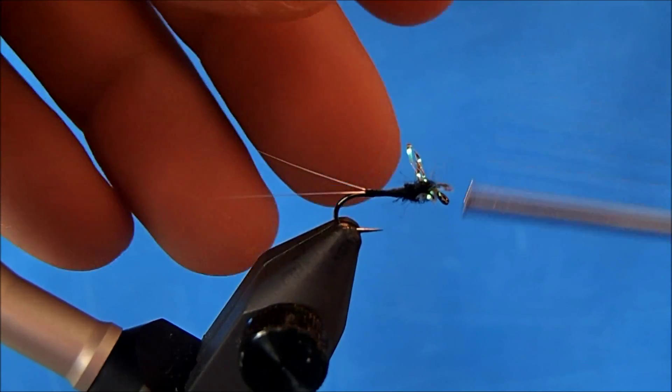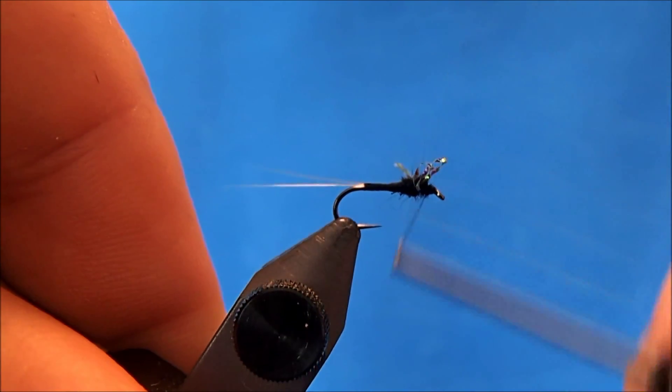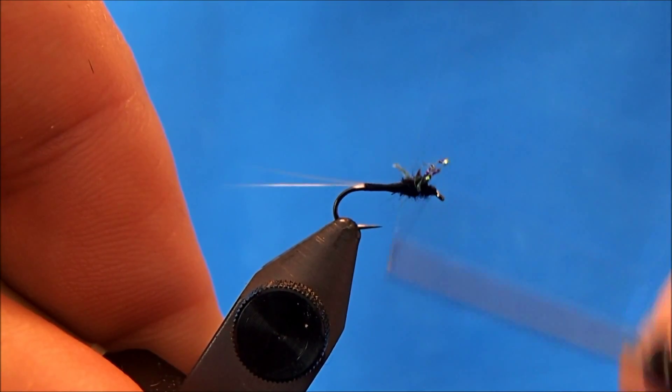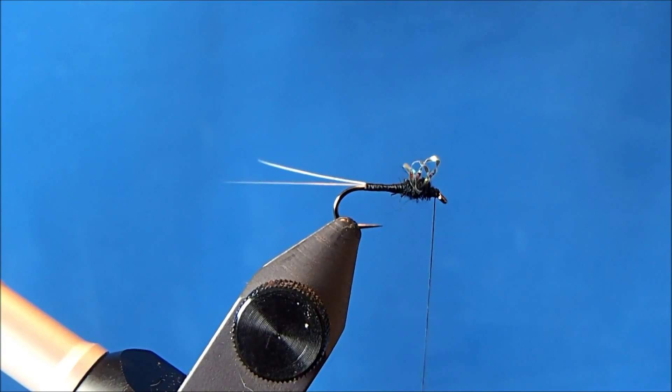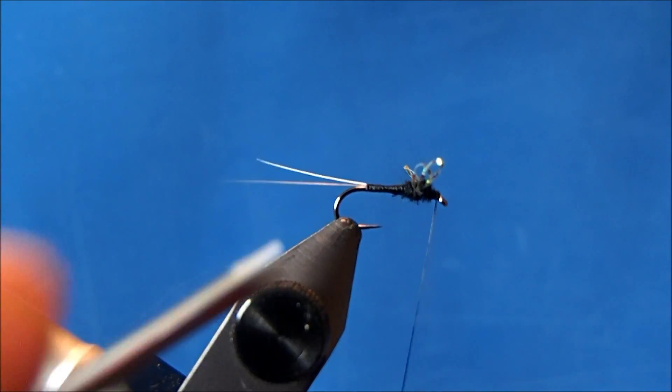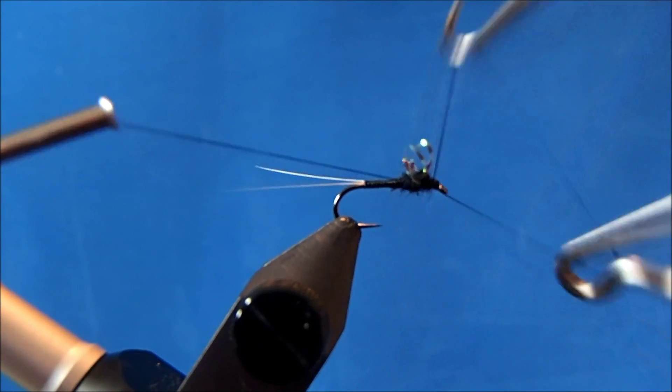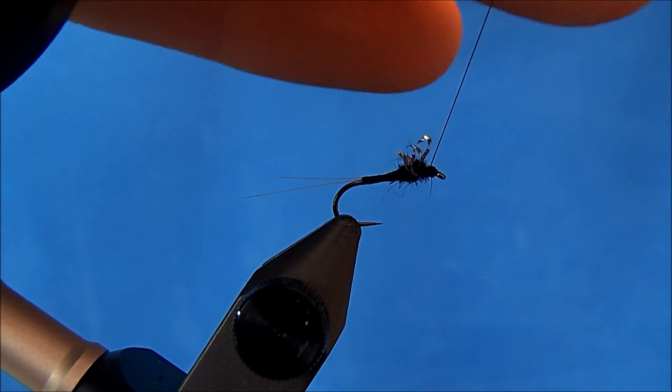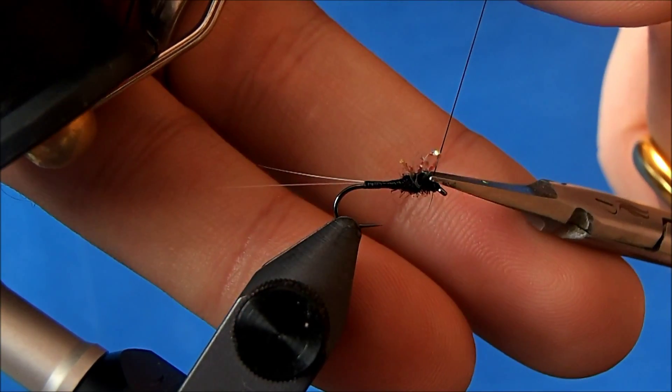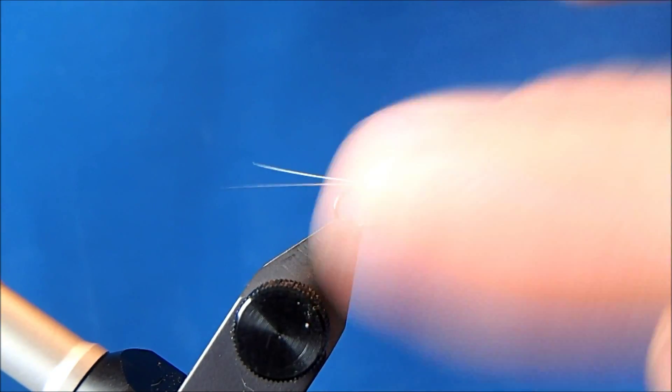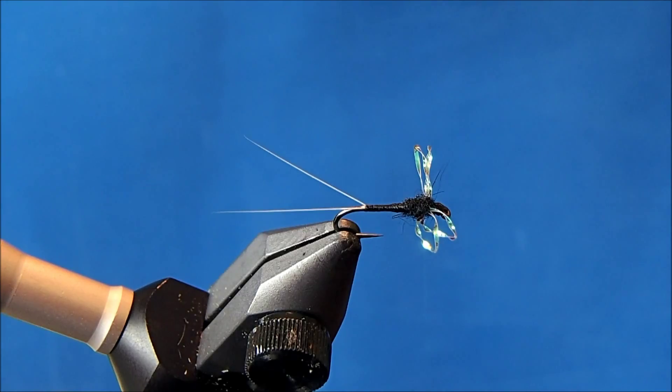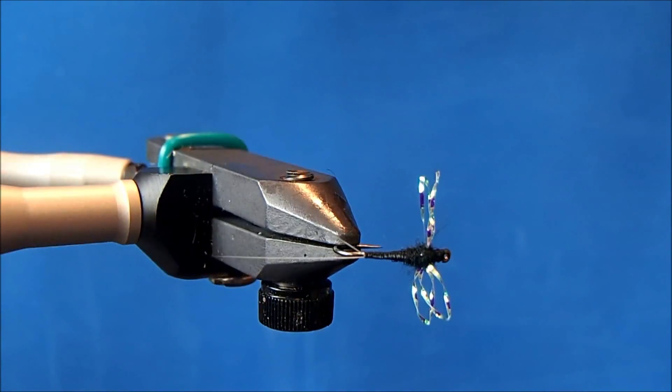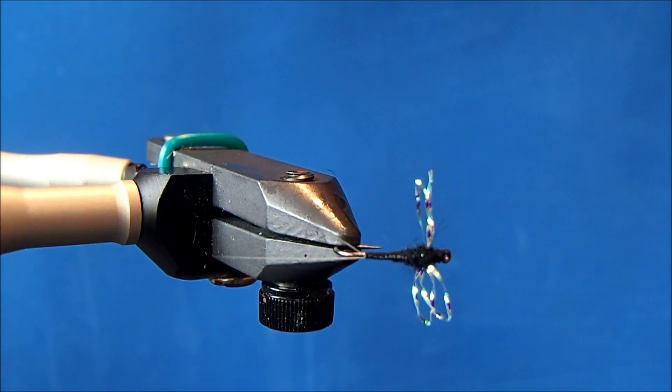This will give you another chance to make sure they're positioned just how you want them. Then I'll come back and build out a little thread head and whip finish and trim. And that is a sparkle wing trico.